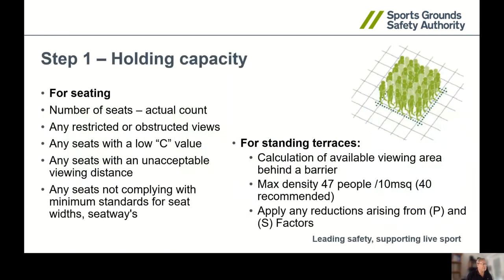So let's look at the steps. The first step is the holding capacity. For seated accommodation that's easy — we just count the number of seats, as long as you take out any severely restricted views and make sure that all the seating accommodation meets the current standards of the Green Guide, whether it be the width of the vomitories, gangways, or the seatways. But for standing accommodation it's a bit more complex. We calculate the area behind the barriers and then apply a density factor — how many people you would get in a 10 square metre area. The Green Guide sets it at 47 per every 10 square metres. However, we recommend generally 40 people per every 10 square metres, and the diagram at the top is a typical indication of what 40 people per 10 square metres looks like.